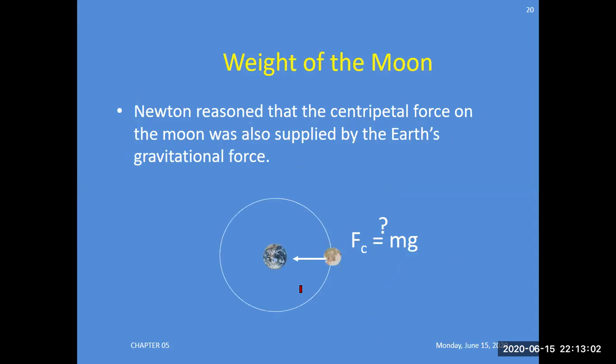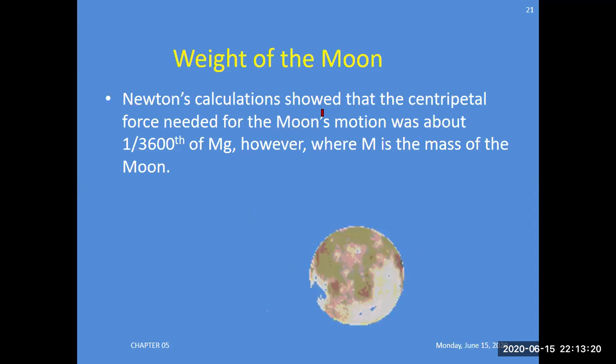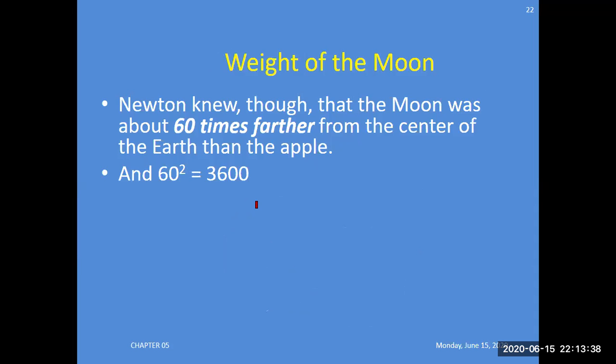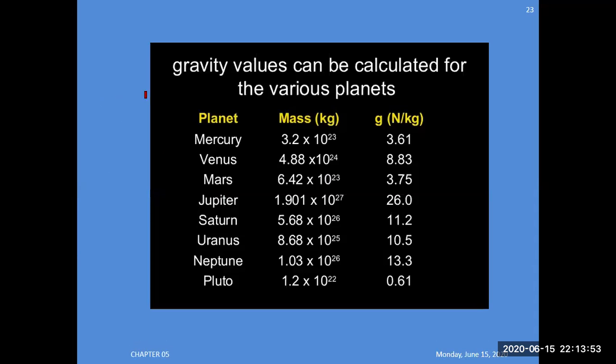Weight of the Moon: Newton reasoned that the centripetal force on the Moon was also applied by Earth's gravitational force. Newton calculated that the centripetal force needed for the Moon's motion was about one over 3600 of mg, where M is the mass of the object. Newton knew the Moon was about 60 times farther from the center of the Earth than the apple. If you take the scale of 60 squared, that is 3600.